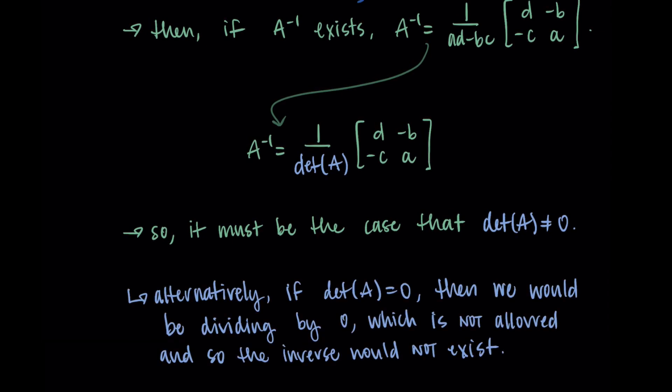If the determinant of A was zero, we'd be dividing by zero, which isn't allowed, and we wouldn't have an inverse. So this tells us that in order to have an inverse matrix, it needs to have the determinant not be zero, at least in the two by two case.